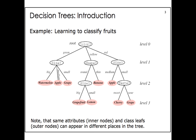So what does a decision tree look like? For example, we want to build a model to classify fruits — what type of fruit it belongs to. This is one example decision tree. Starting from the root node, the question is: which color does the fruit have — green, yellow, or red? If the color is green, it goes to the left branch. The next question is: what is the size of the fruit — big, small, or medium? If it is big, then we say it is a watermelon. This is the knowledge we want to learn from the data. Once we have the decision tree, we can use this simple logic to deal with any new fruits.